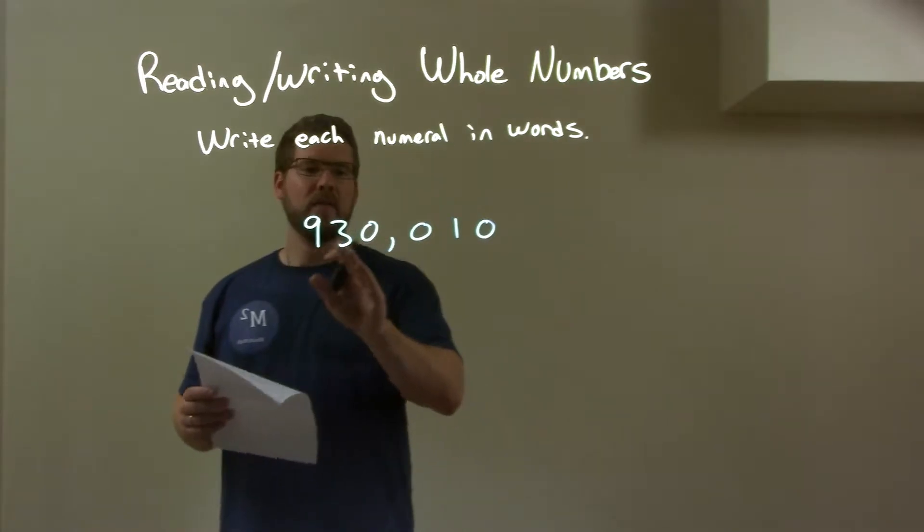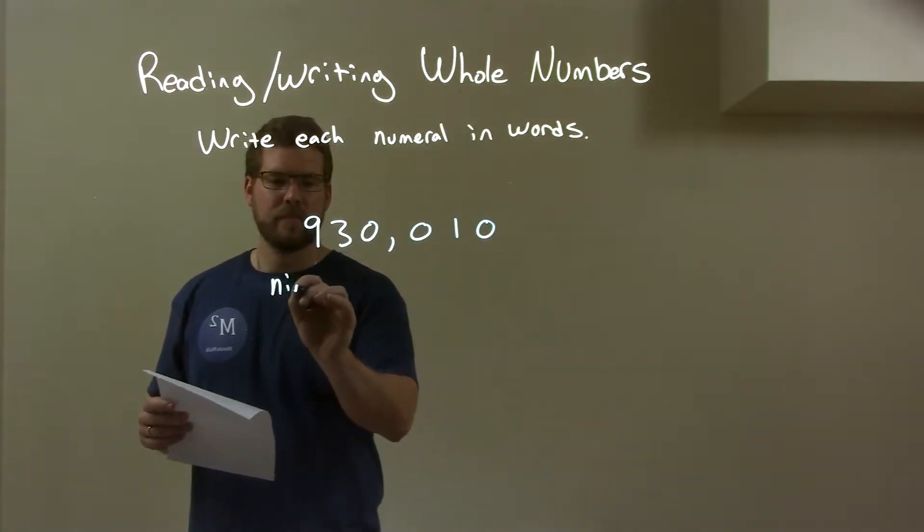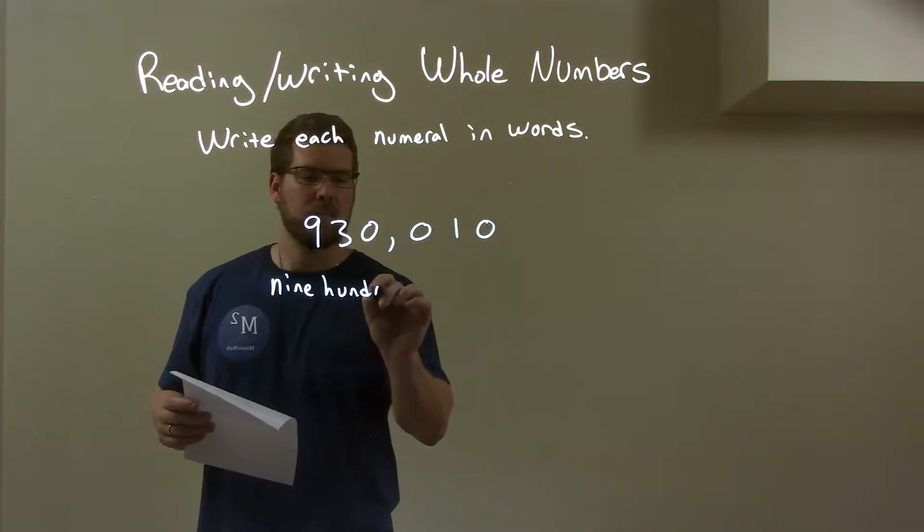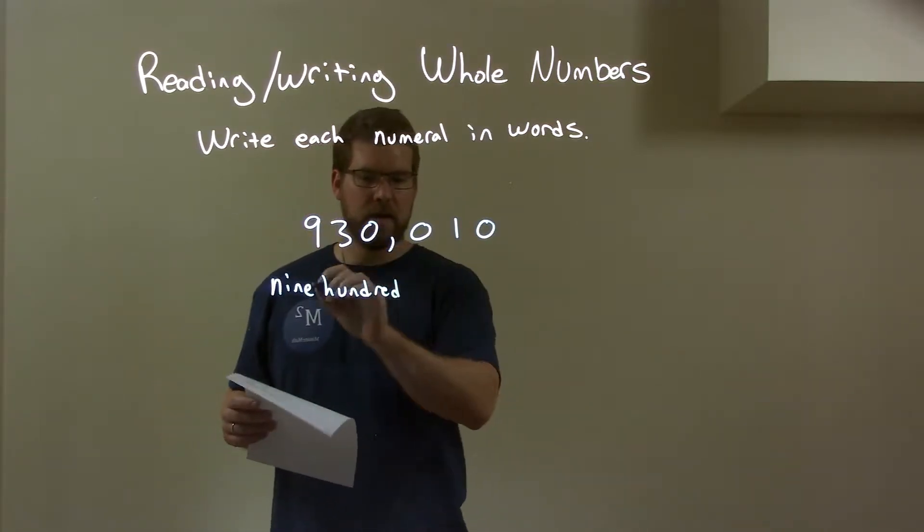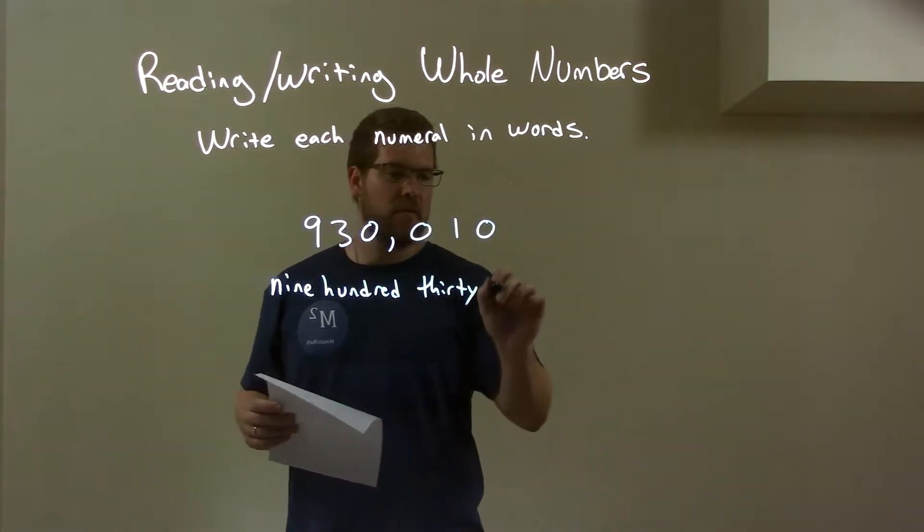Well, first thing I look at is 9, 3, 0. And that is 930, right? 930. But this is in the thousand section, so thousand.